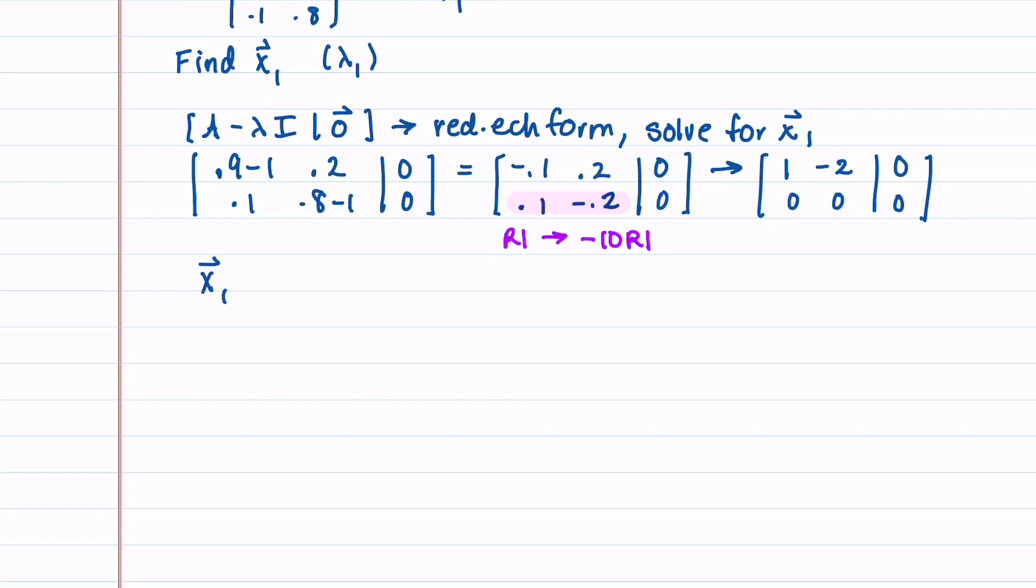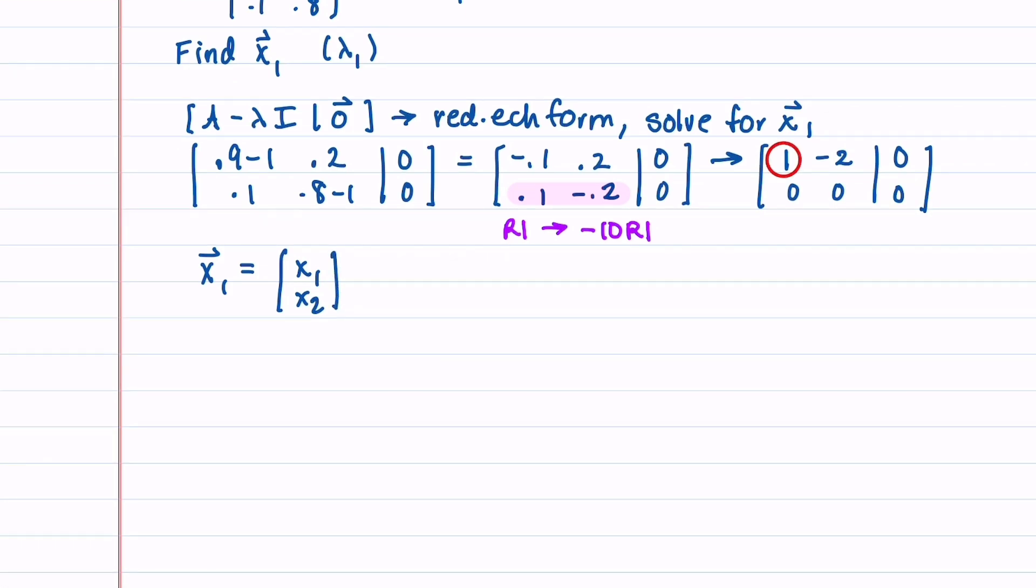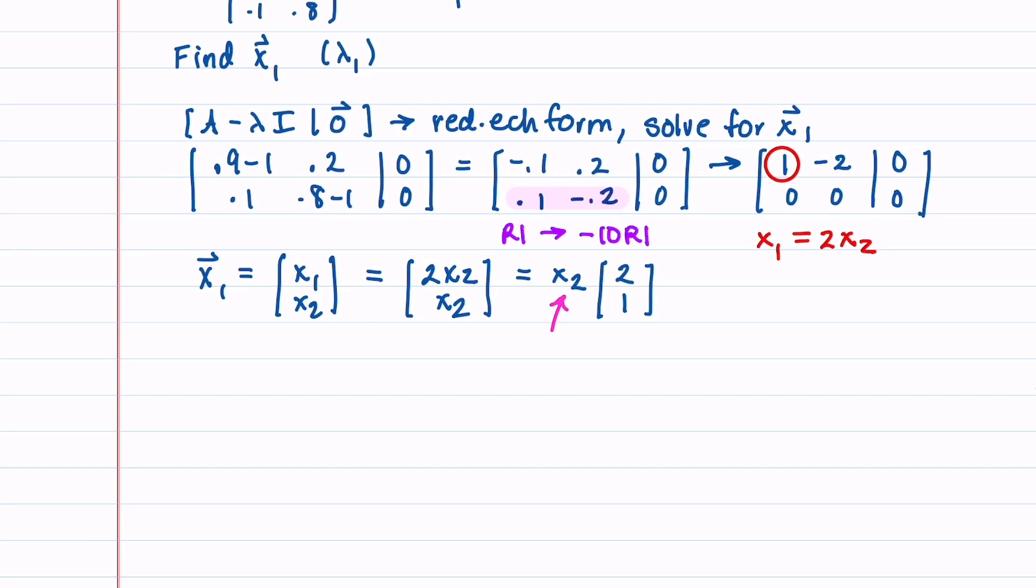Let's now let x_1 = [x_1, x_2]. We can circle our pivot, and that tells us x_1 = 2x_2. We'll plug that in, so we end up with [2x_2, x_2]. We can pull the x_2 out, and we have the vector [2, 1]. To choose our eigenvector, we need to pick a value for x_2, and to make things easy, I'm going to let x_2 = 1, and that gives us the eigenvector x_1 = [2, 1].